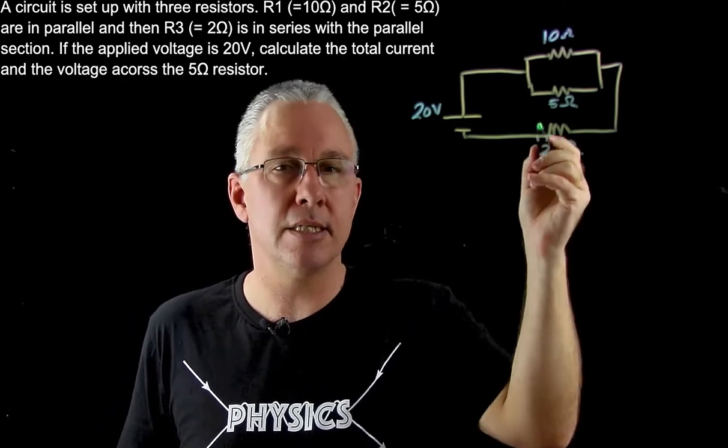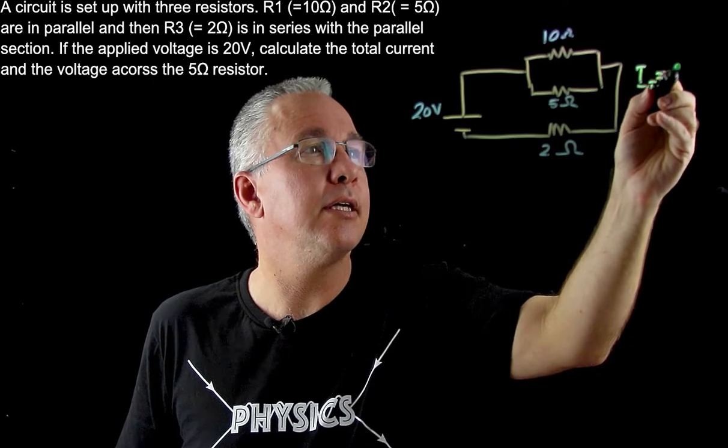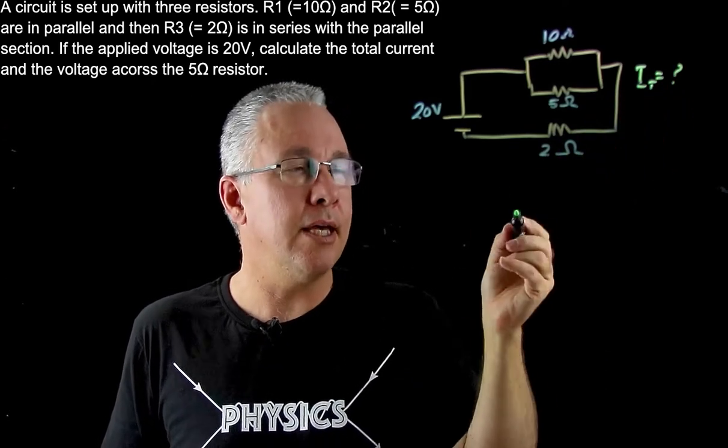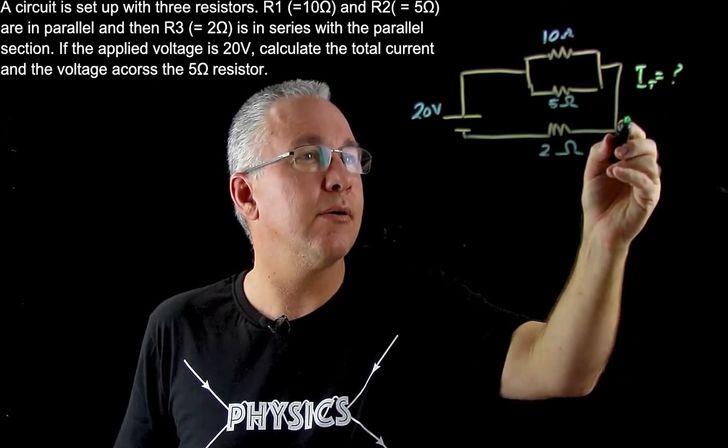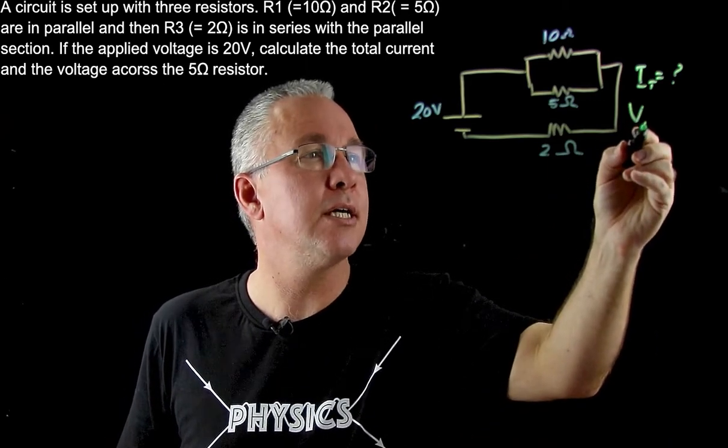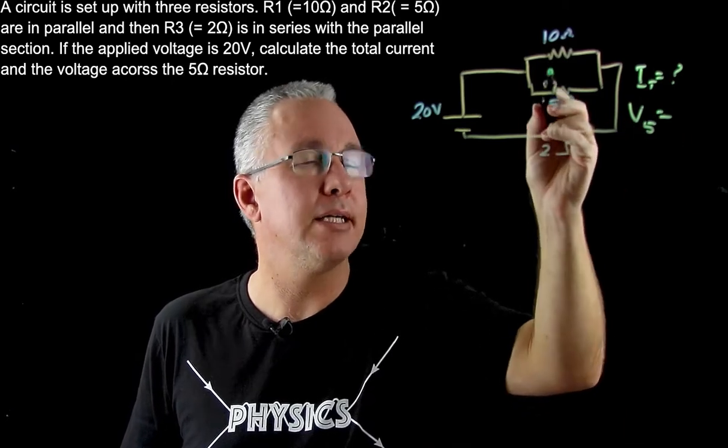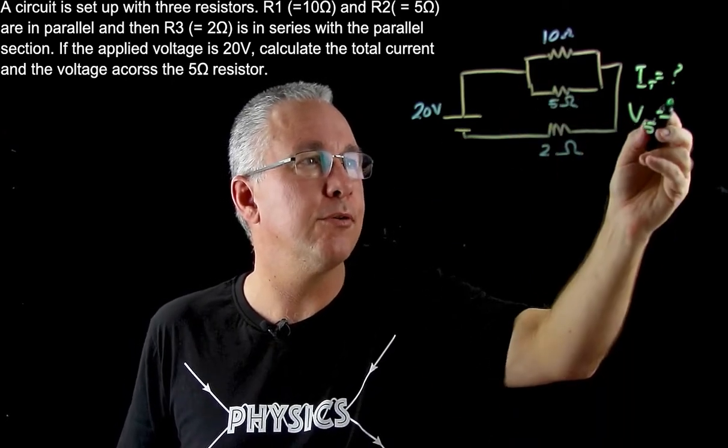Now lastly, what you do with your diagram is say what you need to find out. In this case, we need to work out the total current and then the voltage. The voltage we're interested in is across the 5 ohm resistor, so I put a little subscript 5 there to make it really clear which one I'm looking for.